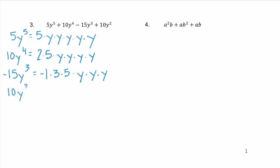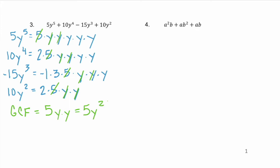And our last term, 10y squared — 10 is 2 times 5 and y squared is y times y. Again, the same process: to find our GCF, we look at all four terms and identify what they have in common. In terms of coefficients, they each have a 5. What's the most number of y's they have in common? 2. So our GCF is 5y squared.